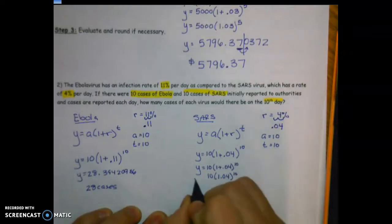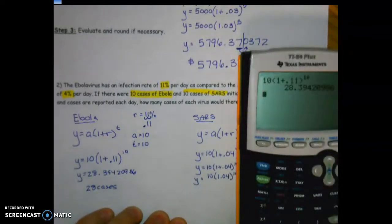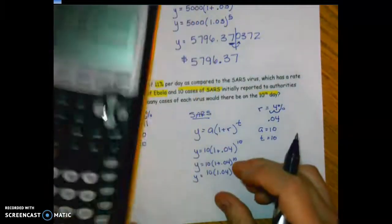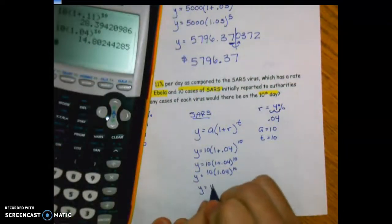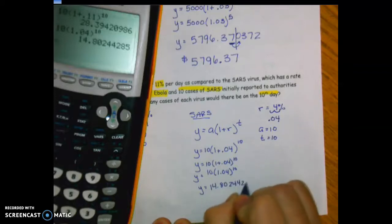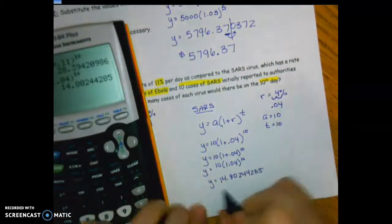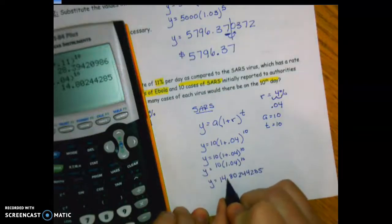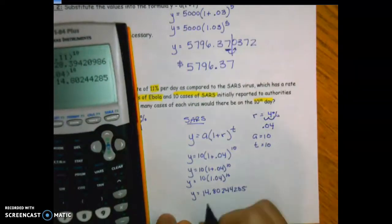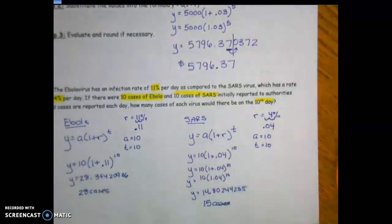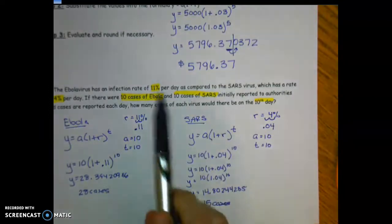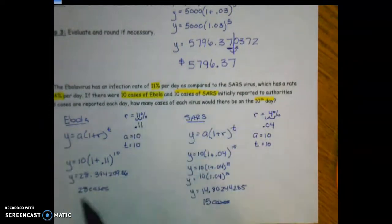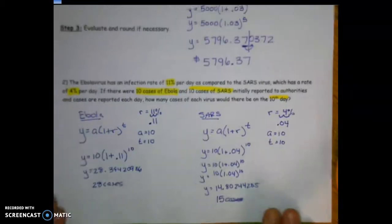Calculating 10 × (1.04)^10 gives 14.802442... The digit after the decimal is 8 — five or more — so round up to 15 cases of SARS. Both started with 10 cases, but Ebola's higher infection rate (11%) led to 28 cases after 10 days, while SARS at 4% led to only 15.